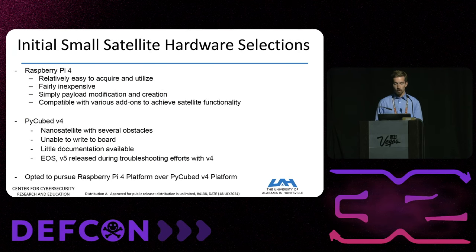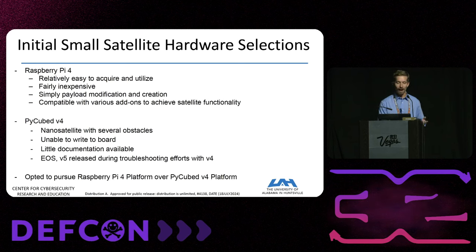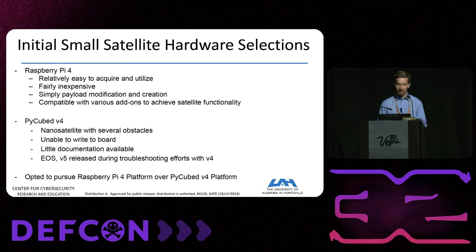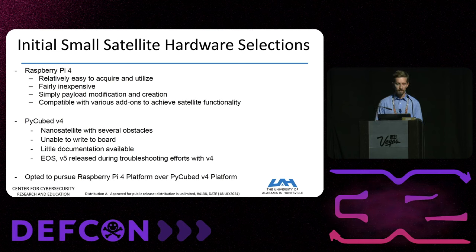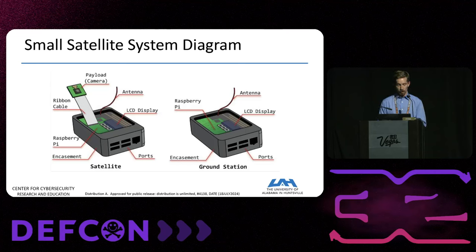At the start of the project we researched the best avenue to build the testbed, comparing the Raspberry Pi 4 and the PiQ board version 4. Raspberry Pis were relatively easy to acquire, inexpensive, simple to modify, had pre-existing libraries, and a large research community. The PiQ boards were developed as nanosatellites but had very little documentation and were end-of-support when we acquired them, so we returned them and moved forward with the Raspberry Pi platform.